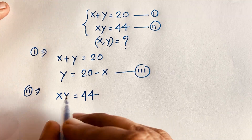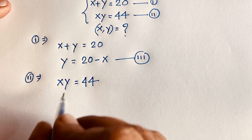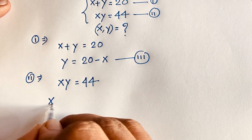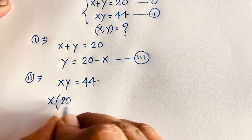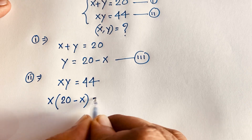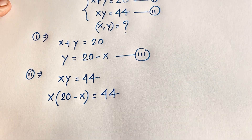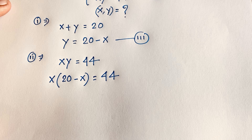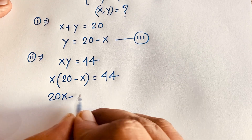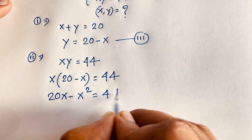Since y is equal to 20 minus x, we substitute this value into the second equation. So it will be x times (20 minus x) is equal to 44. Expanding, we get 20x minus x squared is equal to 44.